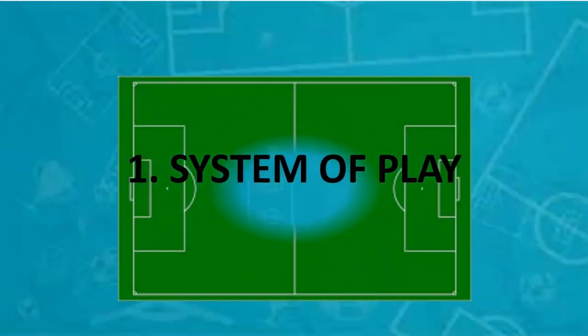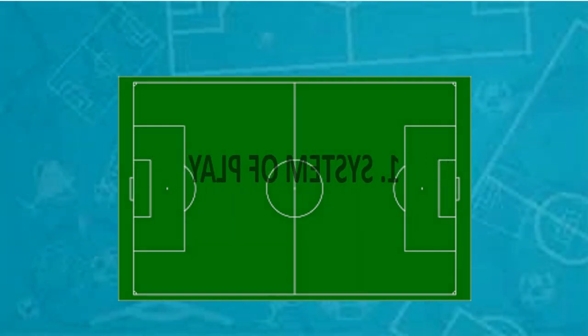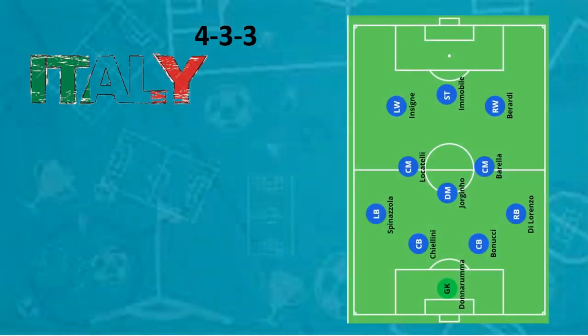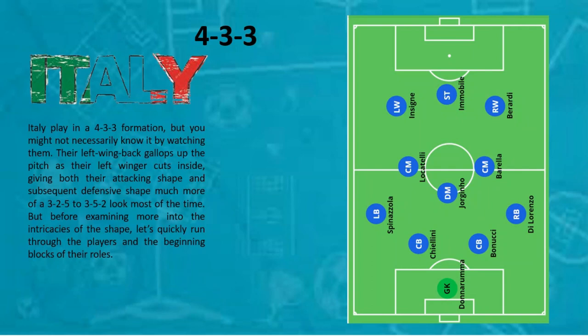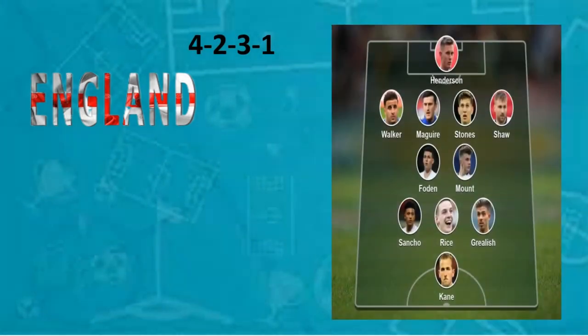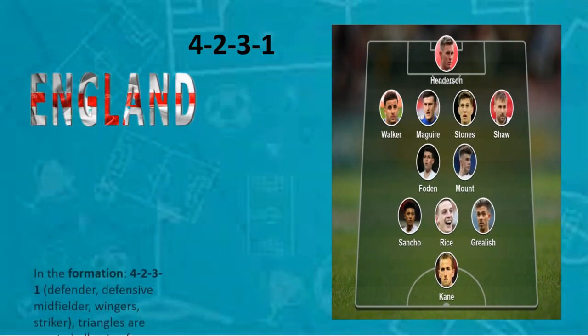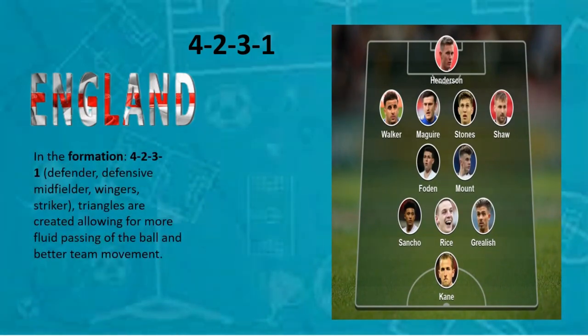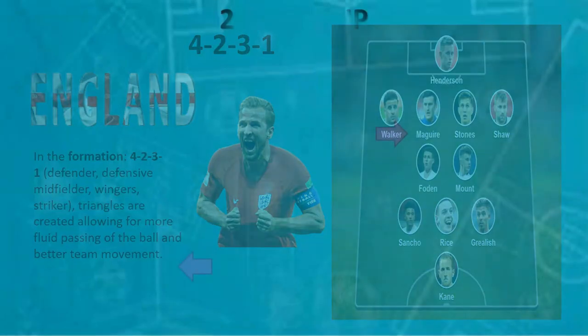First, system of play. The Italy team uses a 4-3-3 formation. The England team uses a 4-3-1-2. Of course, both of these formations have their own advantages. Please try to observe the two strategies they used.